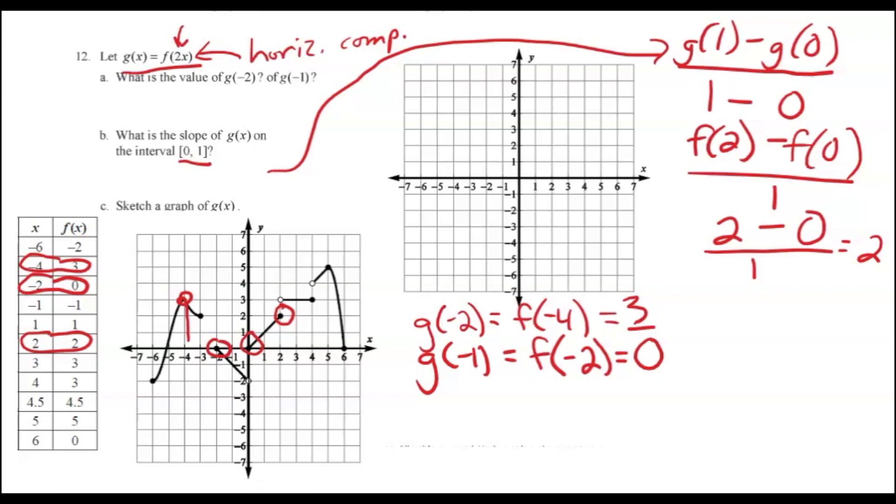So that means, rather than having this point negative 6, negative 2, the X is only going to be half as big, so it'll be negative 3, negative 2. And then, rather than having negative 4, 3, it'll be negative 2, 3. So basically, all the X coordinates are getting halved. Then, rather than having negative 3, 2, you're going to have negative 1 and a half, 2. So this ends up looking like that, and then coming down like this. Now we're ready to move on to the next piece.